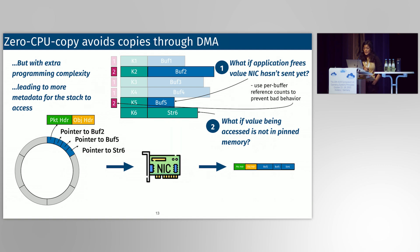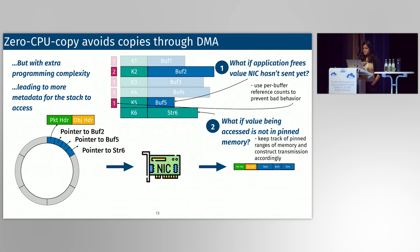These complications do have known or simple solutions, but these solutions lead to the stack accessing more metadata and a generally larger working set size for the application. For the first problem, stacks like DPDK and Demikernel use per-buffer reference counts to ensure memory safety. When the networking stack starts sending buff5, it increments the reference count. If the application frees this mid-send, the reference count decrements, but the value can't be reallocated until the NIC is done. For the second problem, the stack keeps track of pinned and unpinned pages and accordingly copies any data the NIC can't access into pinned memory.